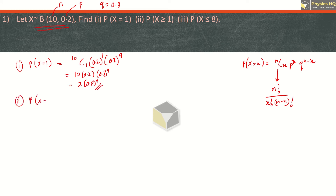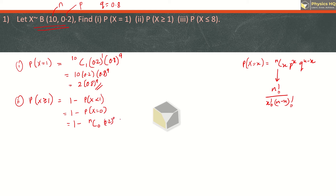In the second case, we need to find the probability that x is greater than or equal to 1. Now greater than or equal to 1 means x can be 2, 3, 4, 5, 6, 7, 8, 9, 10 — all possibilities can come. Since finding all of these is tedious, we use the complement: 1 minus probability of x less than 1. When x is less than 1, x equals 0. So we put the probability for x = 0: nC0 times p raised to 0 times q raised to n-0 = 10. 10C0 is 1, 0.2 raised to 0 is 1, so we have 0.8 raised to 10. This is the answer for the second one.